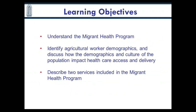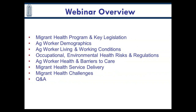Our learning objectives: we want you to have a better understanding of the migrant health program. We want to be familiar with ag worker demographics and characteristics and how that impacts health access and delivery. We're going to discuss some services provided through the migrant health program. The overall flow for today begins with a little history, then demographics, characteristics, working and living conditions, service delivery aspects, some challenges and solutions, and then we'll end with a brief Q&A. If we have a better understanding of this population, we're able to provide better service and hopefully achieve positive health outcomes.